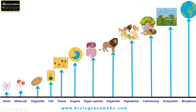A group of lions living in a specific area forms the population. Different populations in a specific area — lion, zebra, wildebeest, etc. — together make a community. Many communities interacting with one another and also with the environment form the ecosystem, like this grassland ecosystem. And finally, all the regions where life exists form the biosphere — a combination of all ecosystems on this planet.